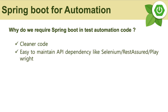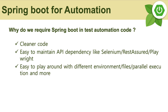Additionally, it is easy to manage API dependencies like Selenium, Rest Assured, or Playwright in Spring Boot. It is also easy to work with different environments, configuration files, and parallel execution in a much simpler way. Everything in Spring Boot is annotation-driven, using the '@' symbol. There's more than what I can cover in a nutshell, but these are the key advantages Spring Boot brings to automation.